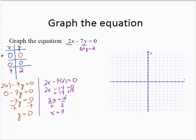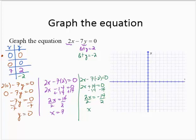And then I'll let y equal negative 2. Letting y equal negative 2, I would have 2x minus 7 times negative 2 is 0. So that's 2x plus 14 is 0. Subtracting 14, 2x is negative 14. Dividing by 2, x is negative 7.